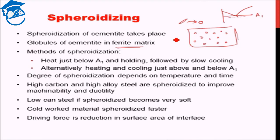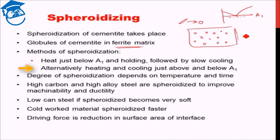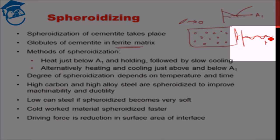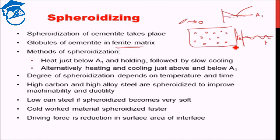Another method for spheroidization is cyclic heating and cooling above and below A1. So we cyclically heat and cool above and below the A1 temperature. These are the two most important spheroidization methods that are used, and both of them work equally well.